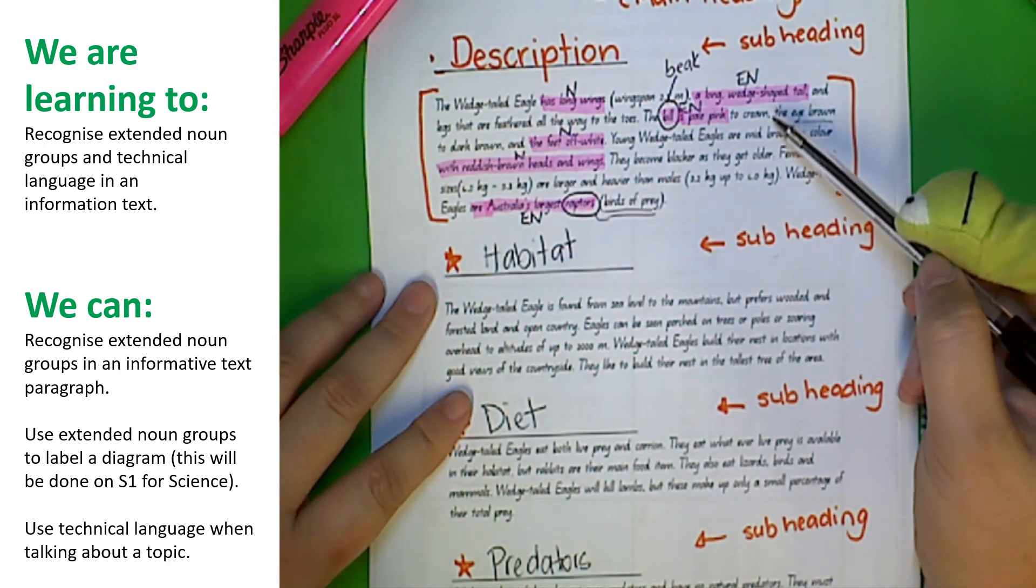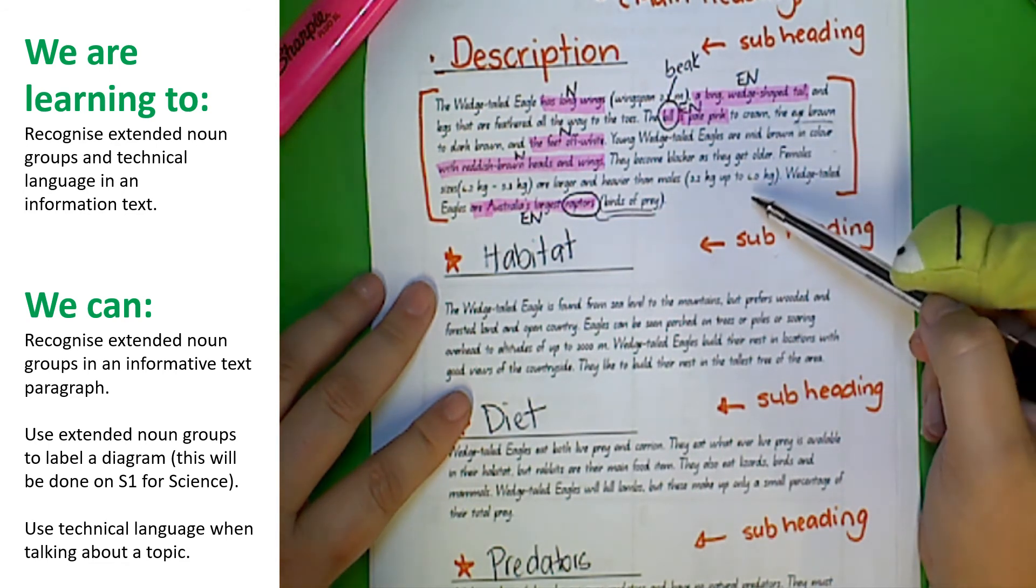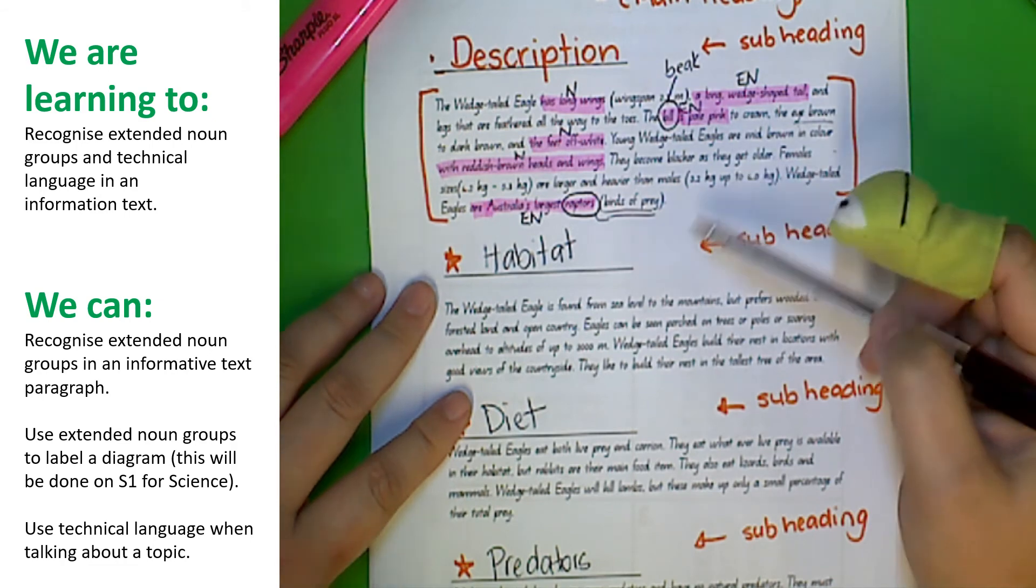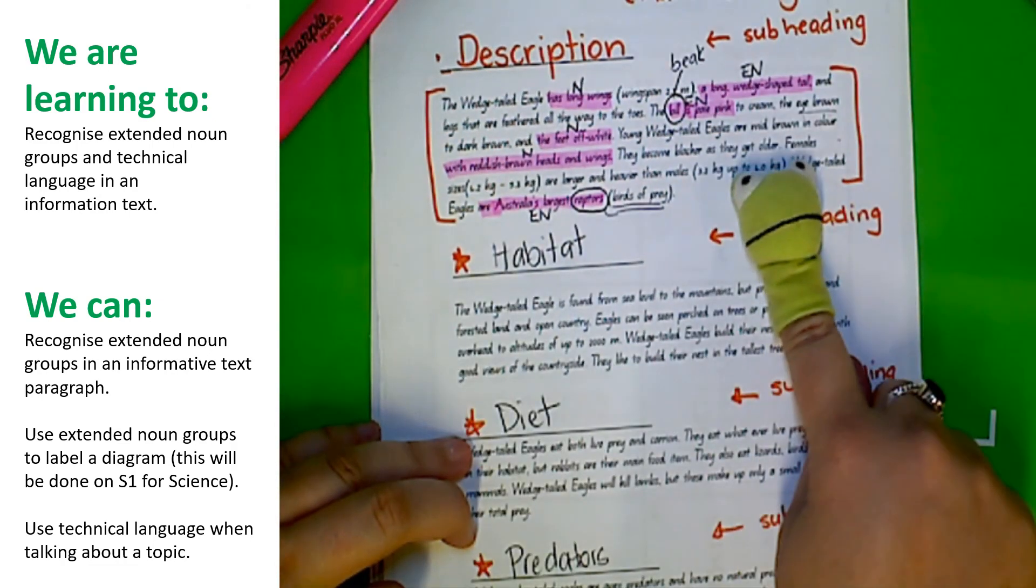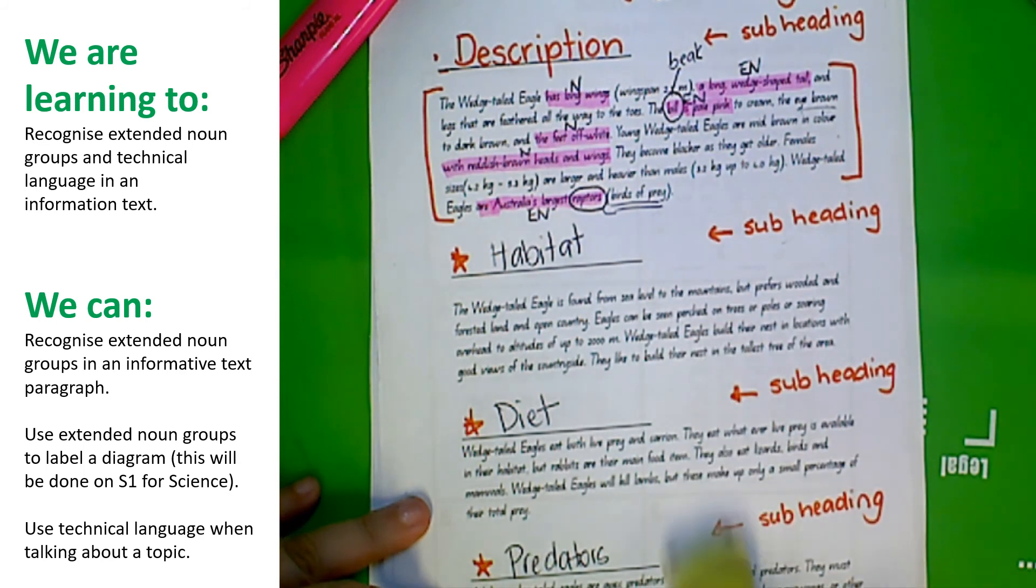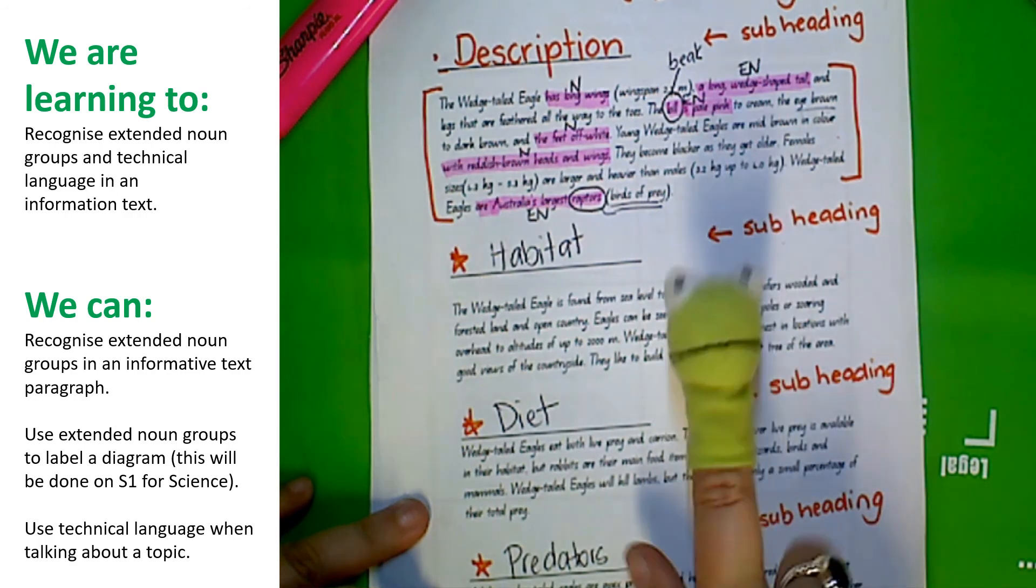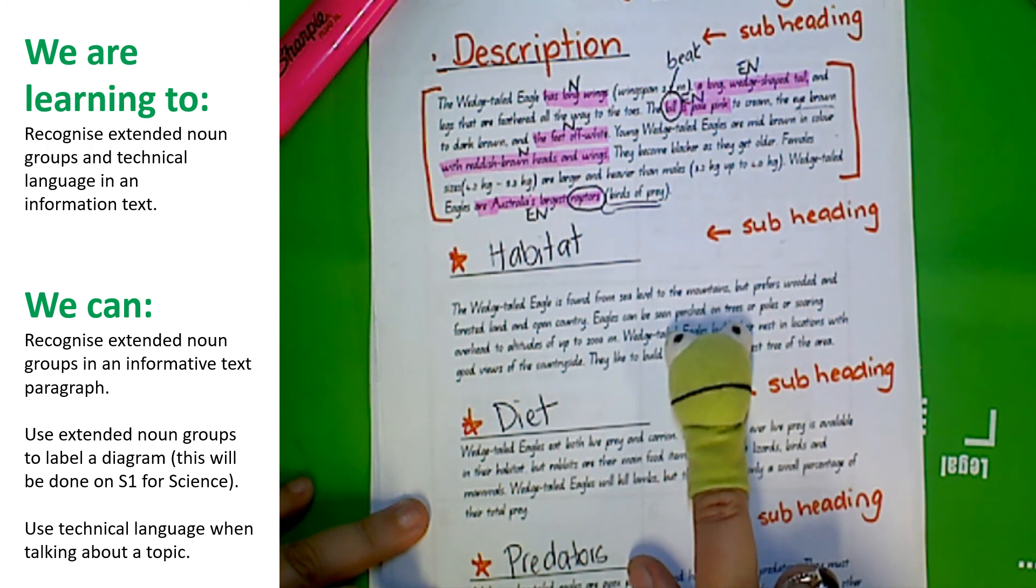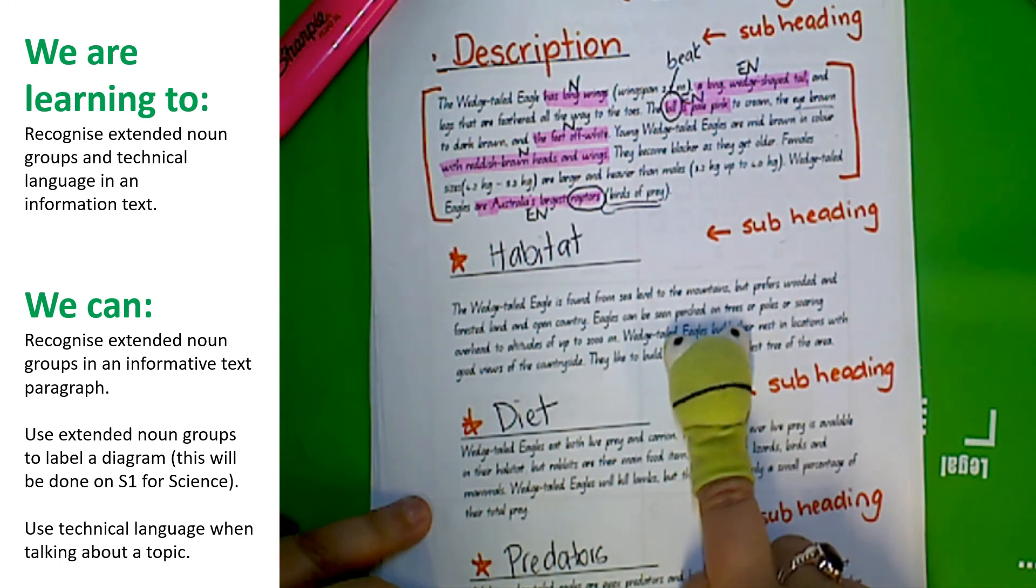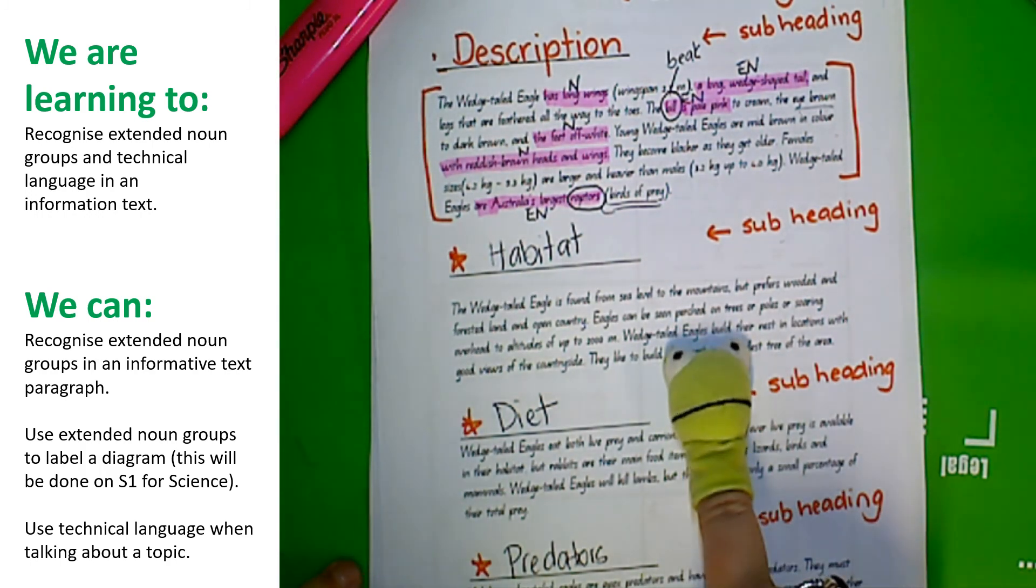Thanks Froggy McFrogface for your help. Now we're going to leave the kids to look at the three other paragraphs and highlight for themselves the extended noun groups and the technical language that they see. Extended noun groups are important in this activity too for when you get to sheet S1 where you are working with Mrs. Arends to label the eagle diagram.